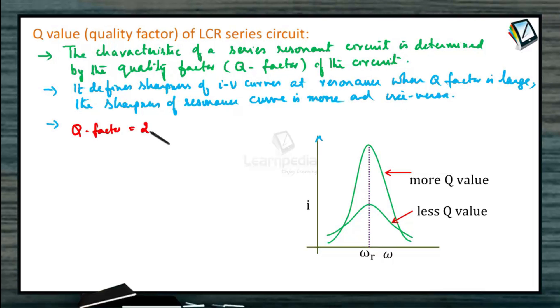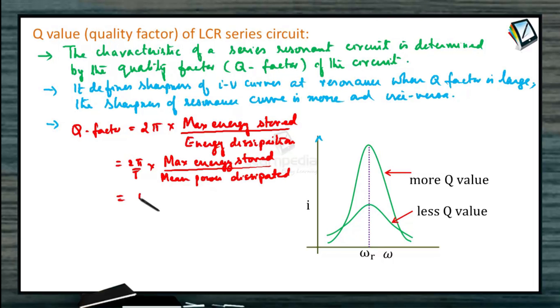Q factor is defined as 2π times maximum energy stored divided by energy dissipation, or 2π by T into maximum energy stored divided by mean power dissipation, or resonant frequency divided by bandwidth ω₀ divided by Δω.